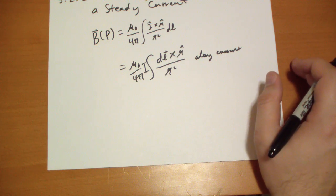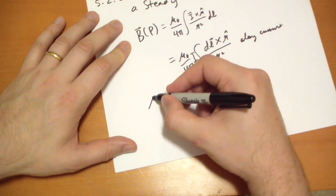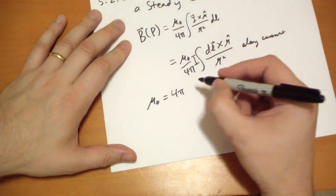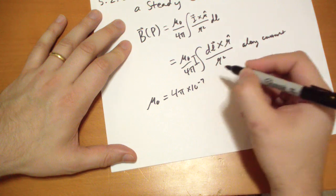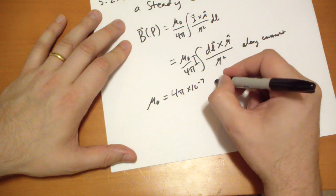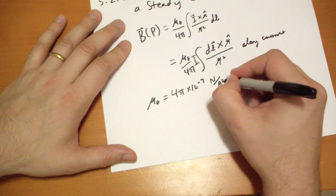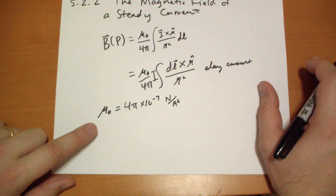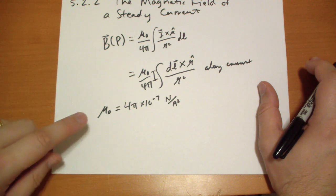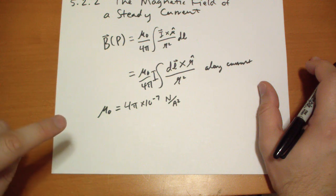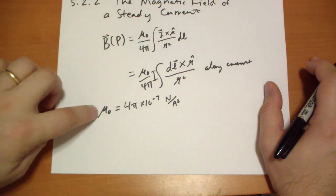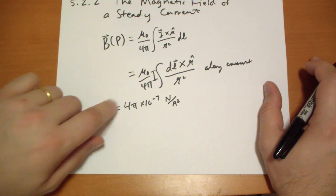Mu0, what in the heck is that? Mu0 is very curious indeed because it's given by the value 4pi times 10 to the negative 7 Newtons per ampere squared. This is one of those constants that is precisely given. In fact, we basically said, let's set mu0 to this value...